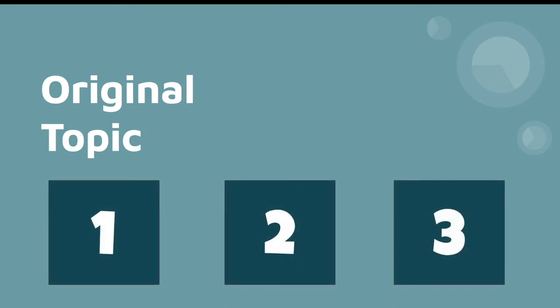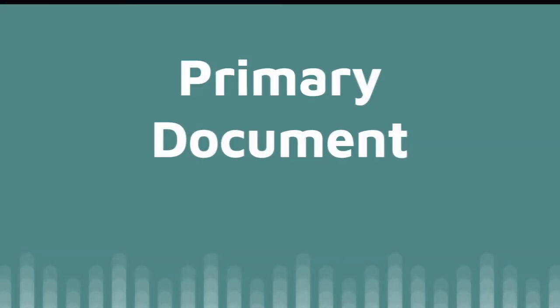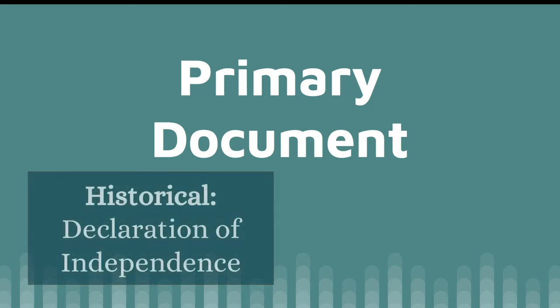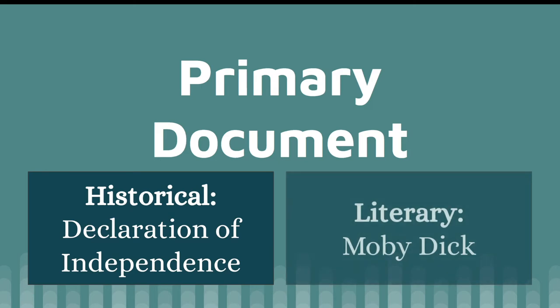These terms are commonly used in history studies, but they will also come up in other areas. A primary document is an original text or recording, usually with some kind of historical significance. For example, the Declaration of Independence is a primary document, as is a novel like Moby Dick. It's the main original source that we are referencing.